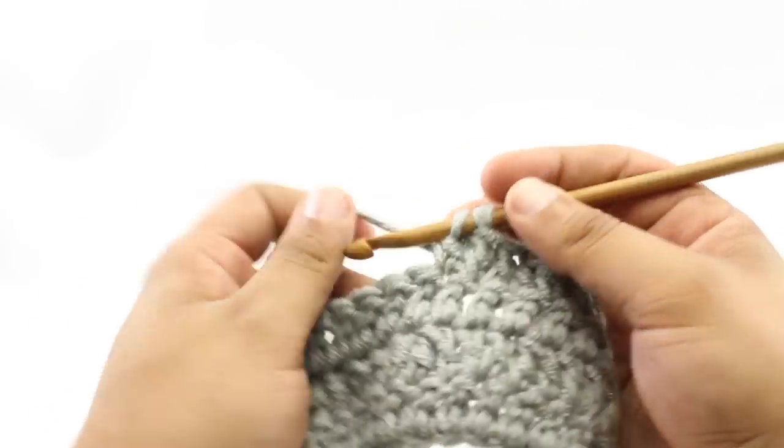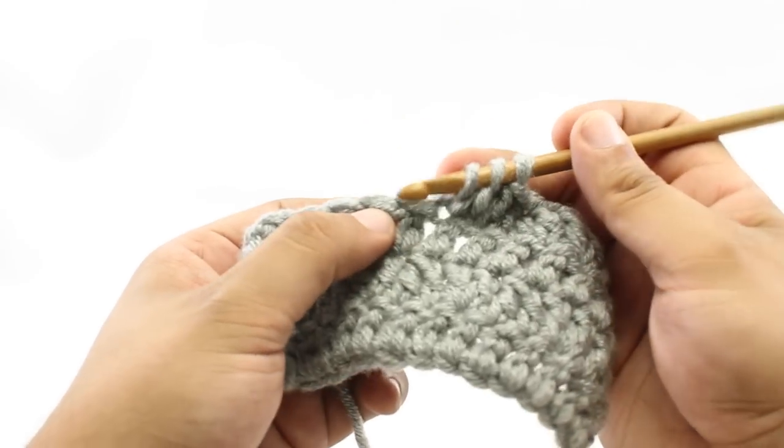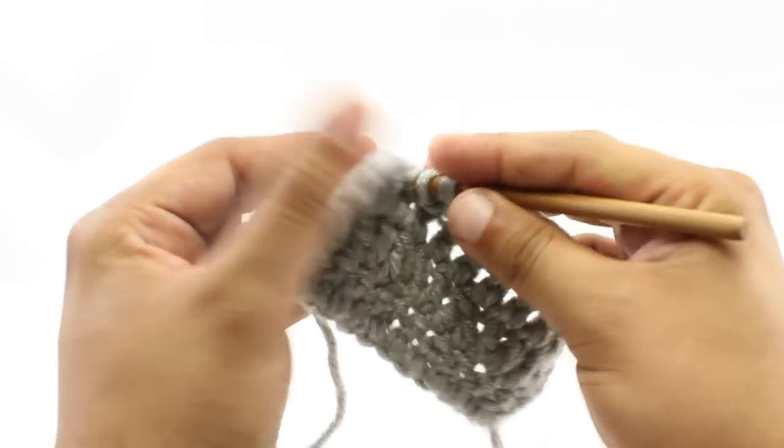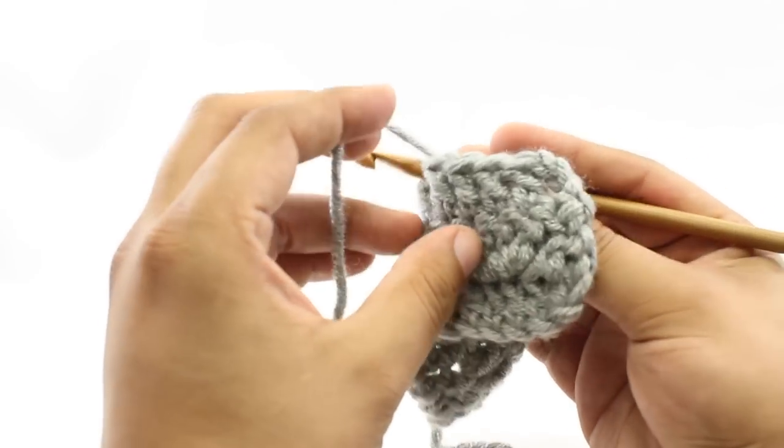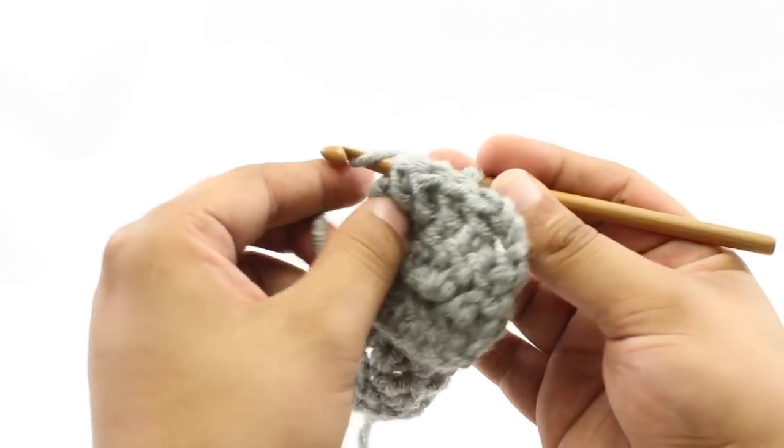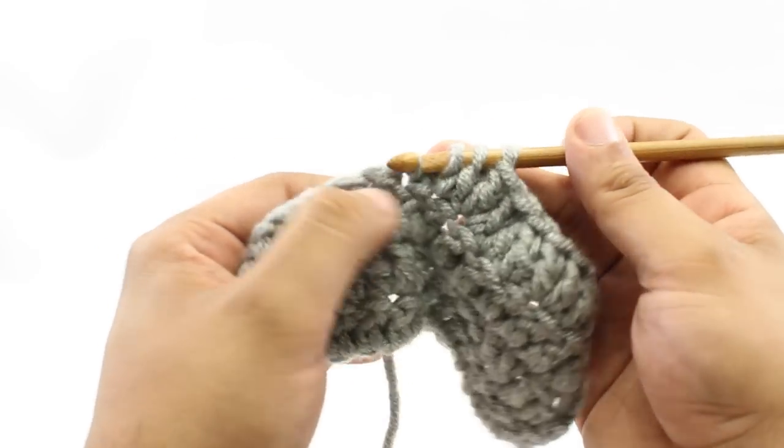So for step seven, we will yarn over again. And step eight, we will insert our hook into the next stitch. Step nine, we'll yarn over. And step ten, we will draw a loop through the stitch.